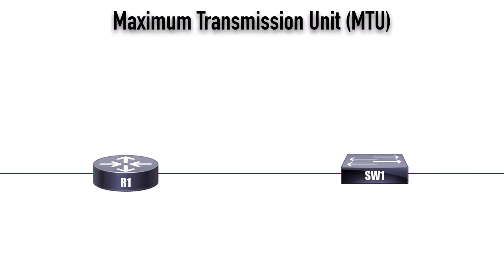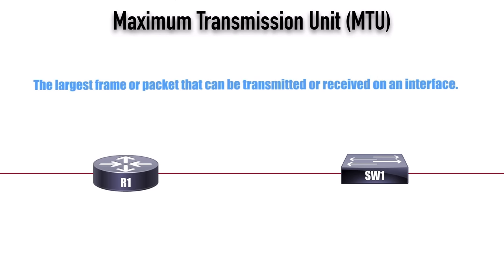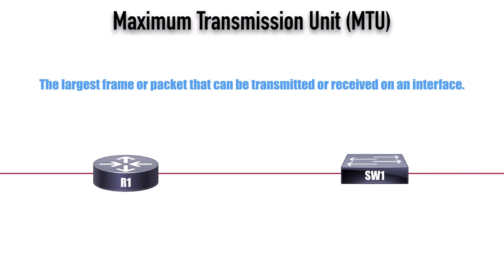In this video, we want to talk about the MTU, the Maximum Transmission Unit. What this is, is the largest frame or packet size that can be transmitted or received on an interface — the interface of really any network device. Notice I say it's the largest frame or packet, because we can talk about the MTU at either Layer 2, where we have frames, or Layer 3, where we have packets.